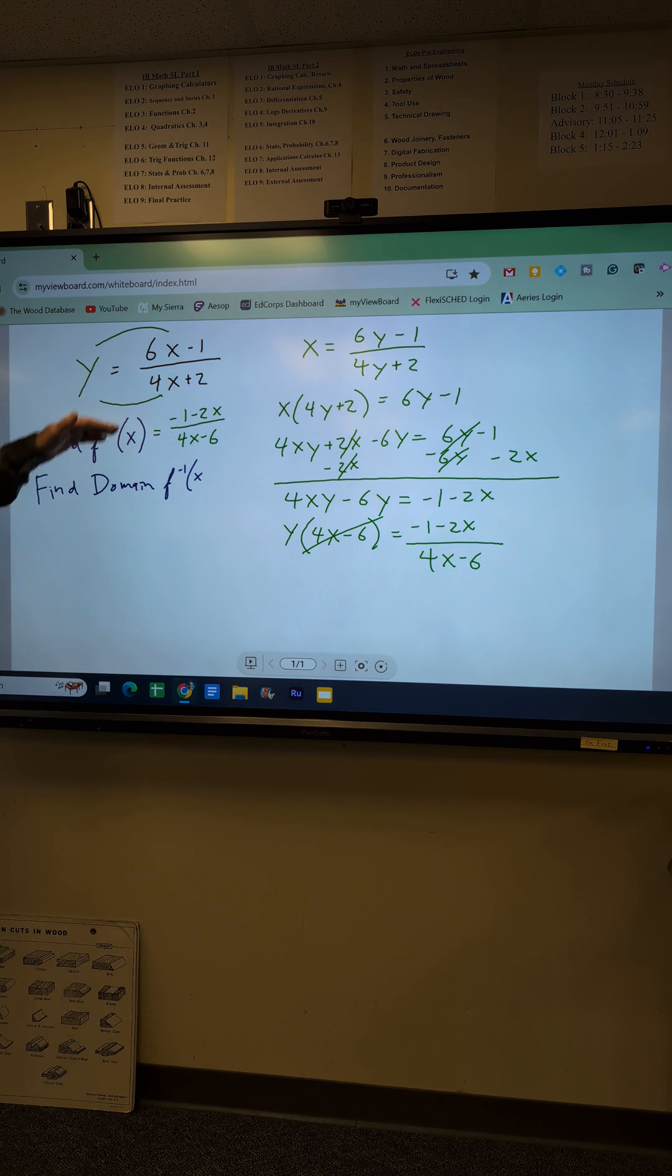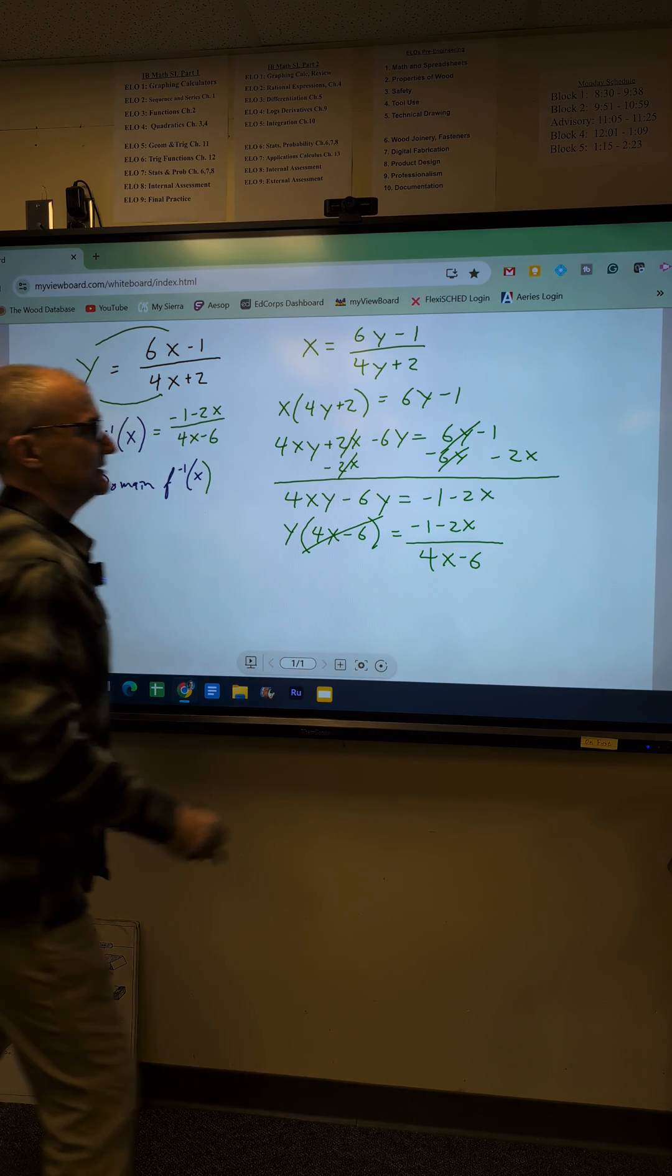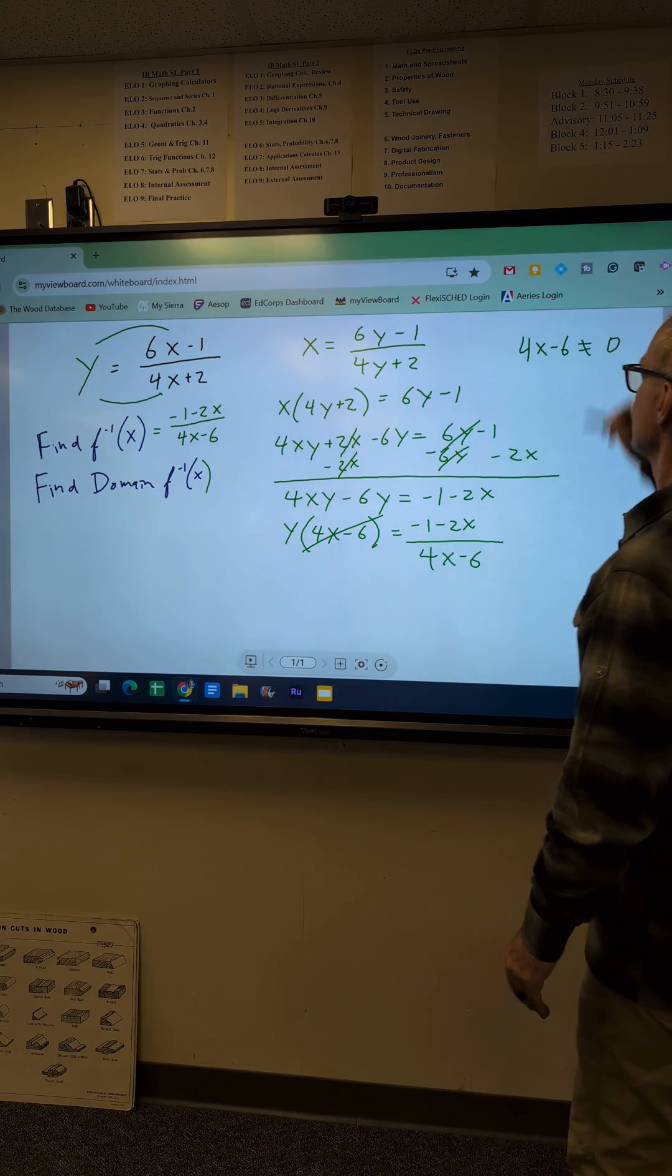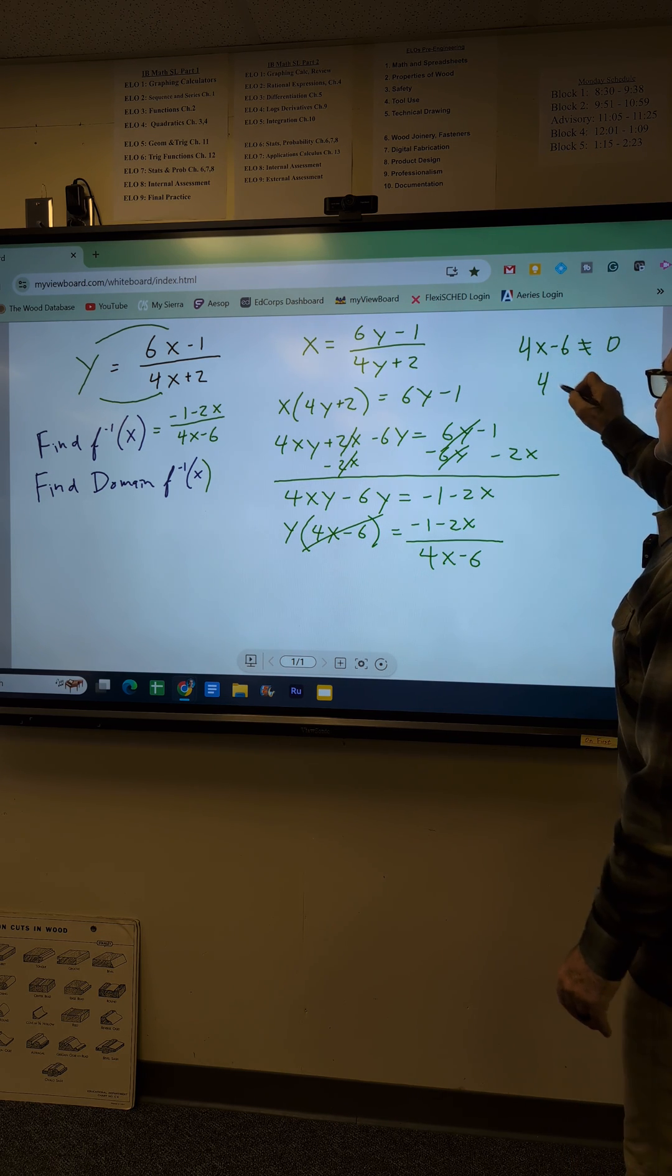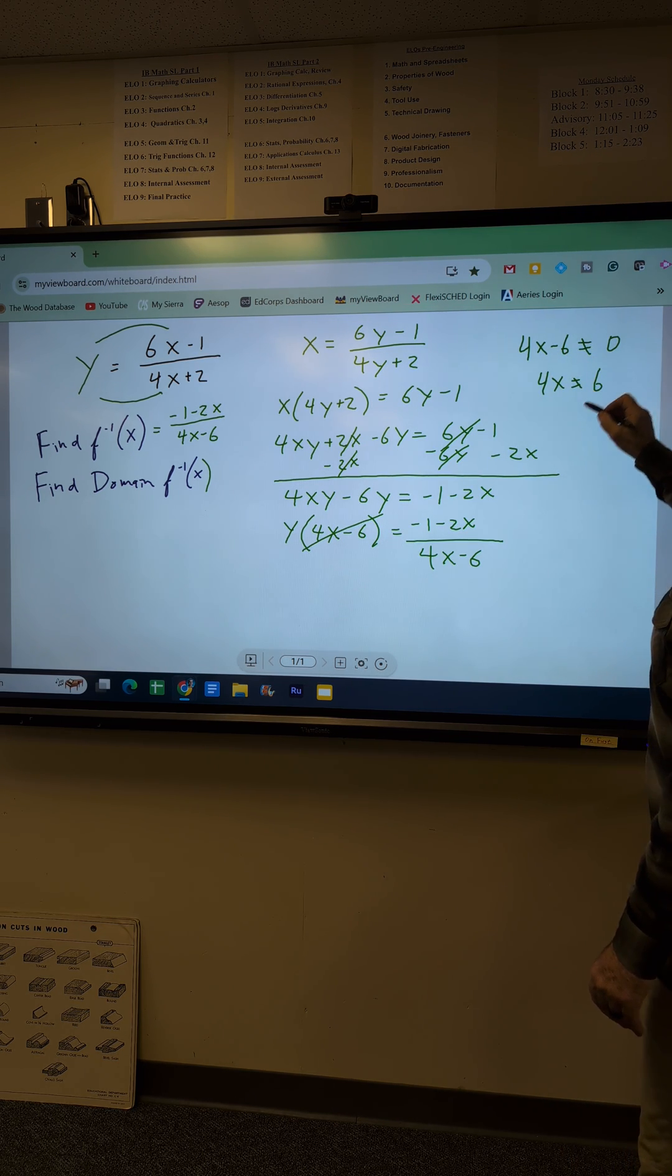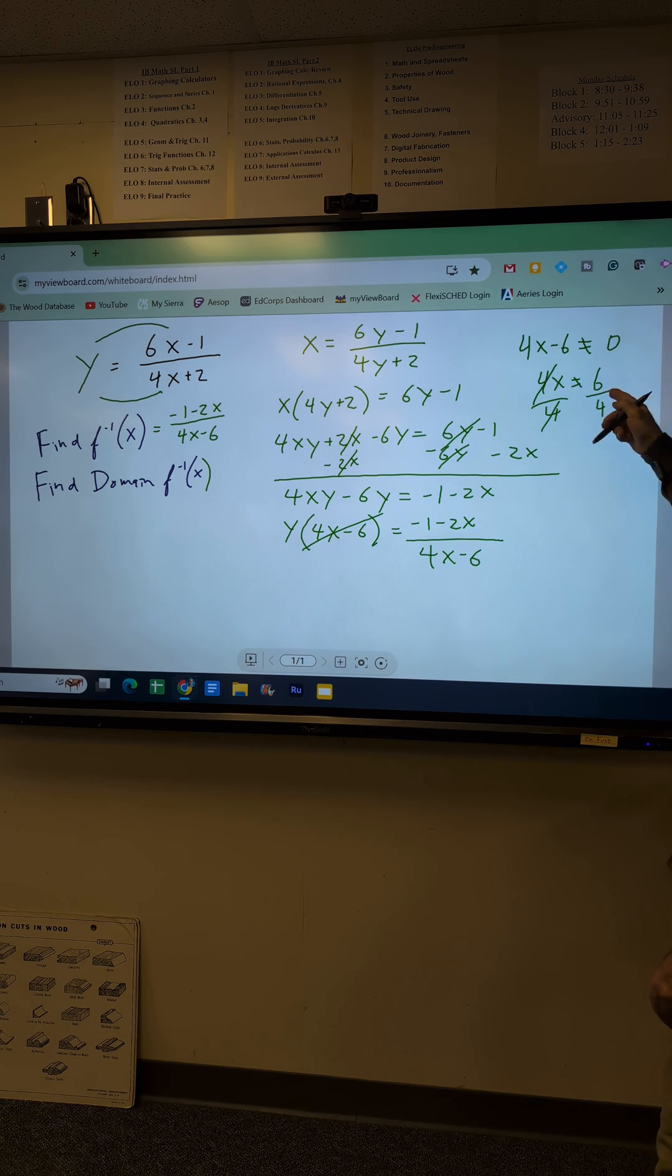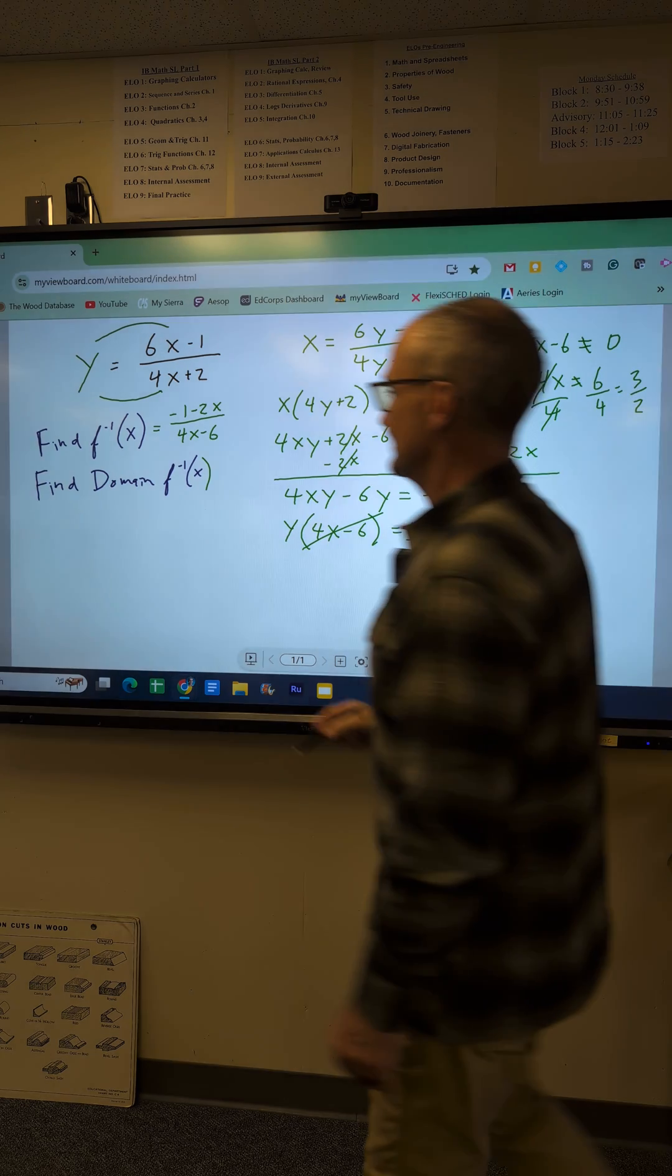Find the domain of that given function. Well the denominator cannot be equal to 0, so 4x minus 6 cannot equal 0. Add 6 to both sides, divide both sides by 4, and I can see x cannot equal 6 over 4, which reduces to 3 halves.